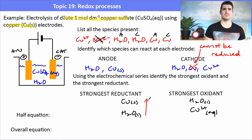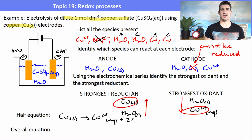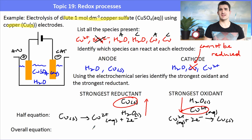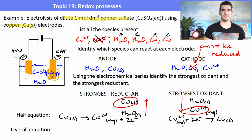Copper solid is the strongest reductant and copper(II) ions are the strongest oxidant, so the reaction takes place between the electrode at the anode and the copper ions at the cathode. At the anode, copper solid turns into copper(II) ions; at the cathode, copper(II) ions turn into copper solid. Essentially, copper is transferred from the anode to the cathode — this is used to refine impure copper by electroplating pure copper onto the cathode.